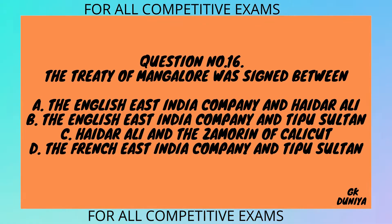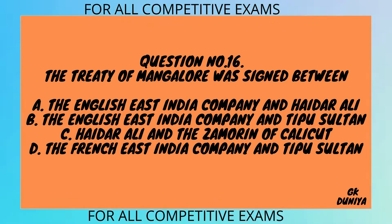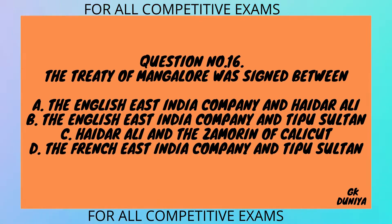Question No. 16. The Treaty of Mangalore was signed between: A. The English East India Company and Hyder Ali, B. The English East India Company and Tipu Sultan, C. Hyder Ali and the Zamorin of Calicut, D. The French East India Company and Tipu Sultan.